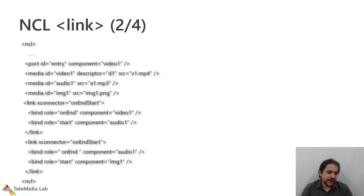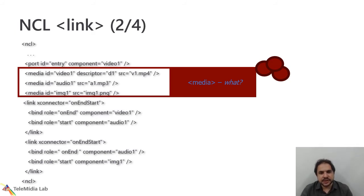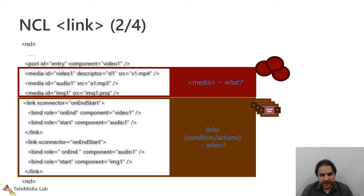Here, we have an example of NCL document that shows the usage of links. First, we have the three media elements that we just mentioned. A video, an audio and an image. And then, we have the two links. The two links have the same reusable behavior, on-end start. The first link defines, then, when the first video ends, the audio will start. And the second link means that when the audio ends, the image will start. So, these links define when the notes will be presented along the presentation.